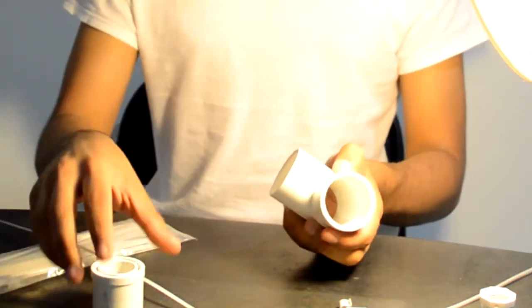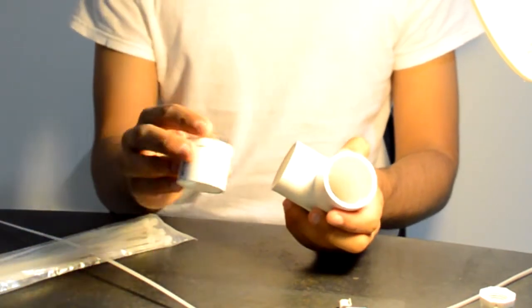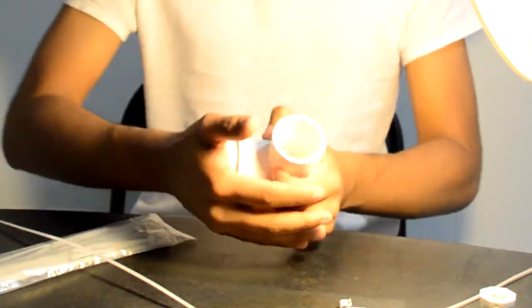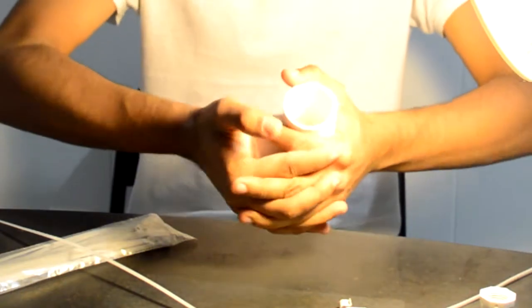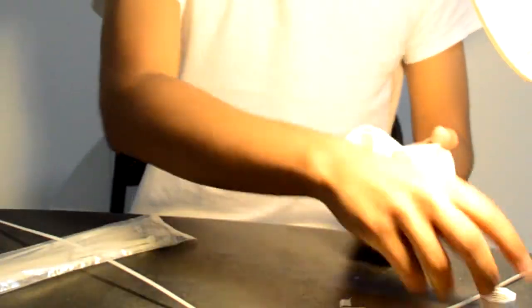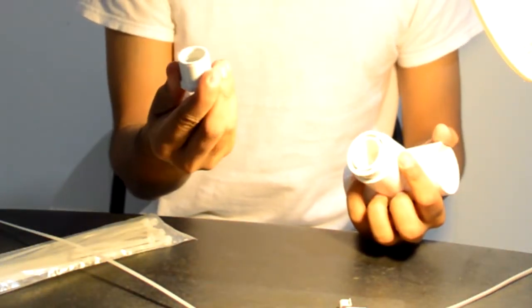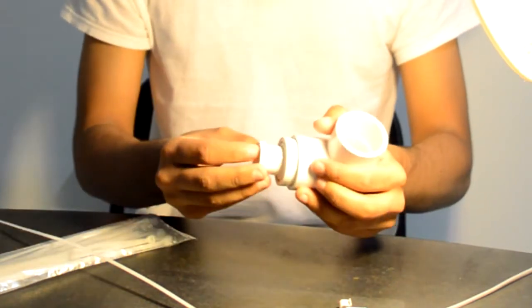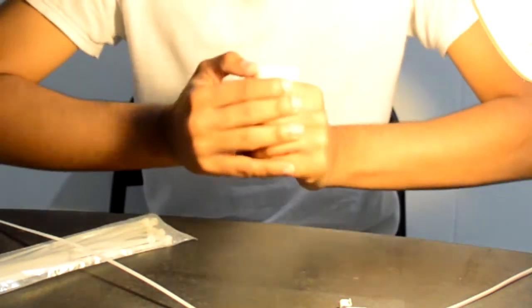So what you want to do is take the T-joint and then take the 1/4 inch bushing and shove it in the T-joint right here. Just press it a little bit. Then take this small one, the 1/2 inch bushing, and shove it in that just like that. One, two, three. Okay, there you go.